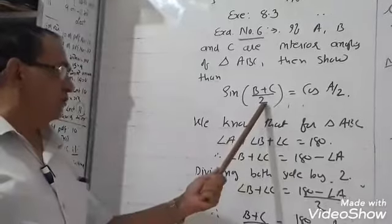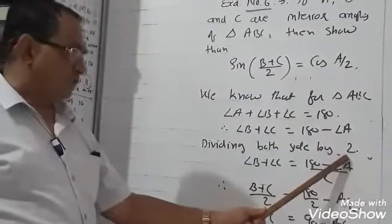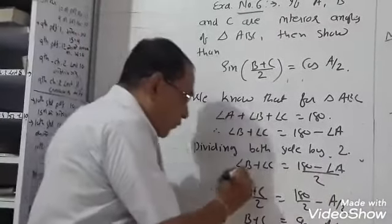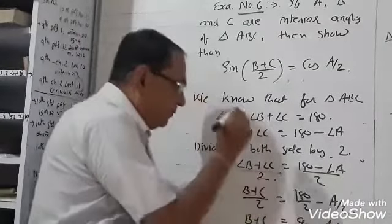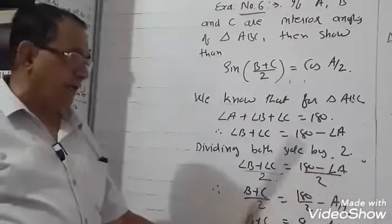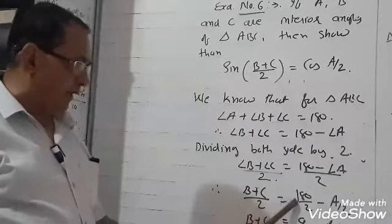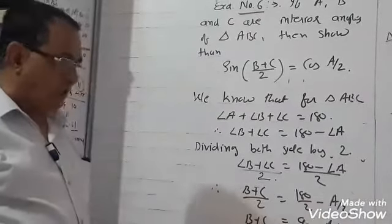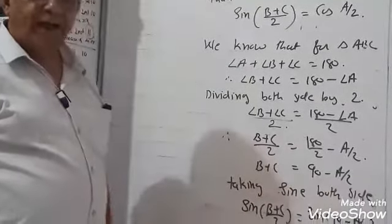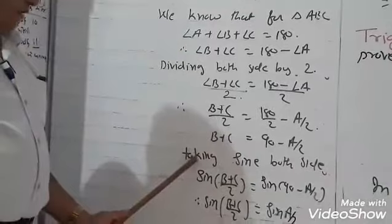Now dividing both sides by 2, we get (B+C)/2 is equal to (180° minus A)/2, which simplifies to 90° minus A/2.